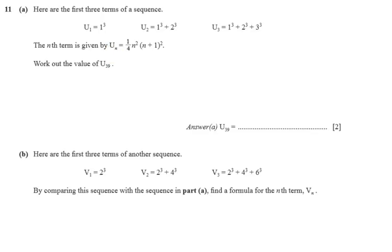Uₙ = ¼n²(n+1)². Fantastic, we do not have to create this nth term rule for this sequence ourselves, so that's why they give it to us. They say work out the value of U₃₉.